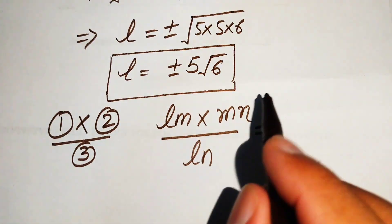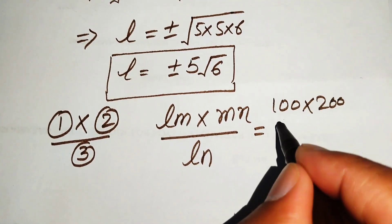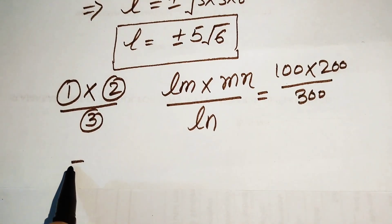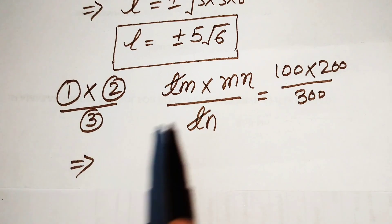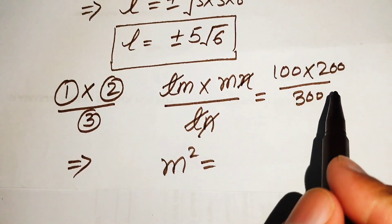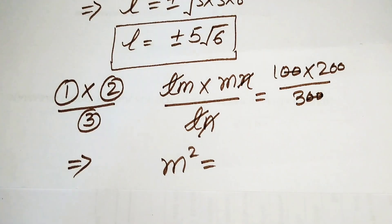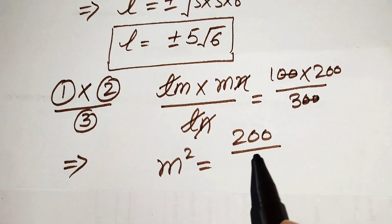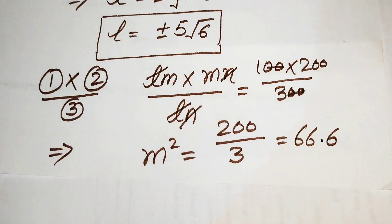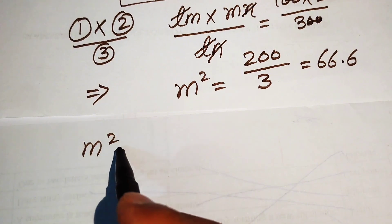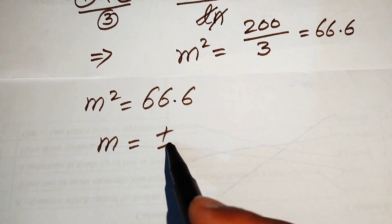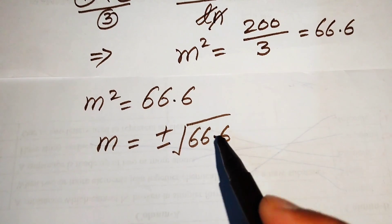Similarly, on the right-hand side: 100 multiplied by 200, divided by 300. We need some simplifications — this L is cancelled by this L, and this N is cancelled by this N. We get M times M equals M squared. The two zeros cancel and we get 200 divided by 3, which equals 66.6. So M squared equals 66.6, and taking the square root gives M equals plus or minus square root of 66.6.